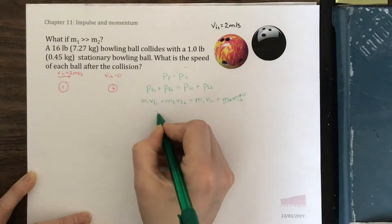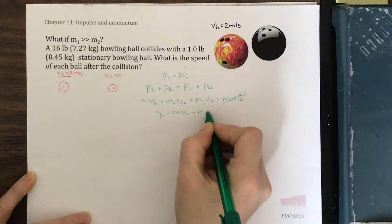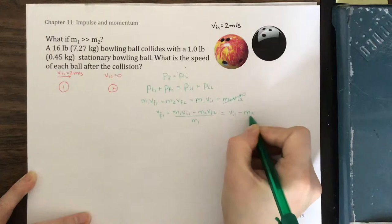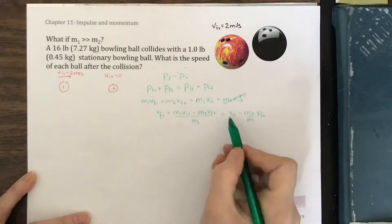So vf1 is equal to m1 v initial 1 minus m2 v final 2. Divide the whole thing by mass 1. Then our m1 goes in here and m1 goes in here and v initial 1 minus m2 over m1 times v final 2. We can put in the numbers we know. v initial 1 is 2 meters per second.